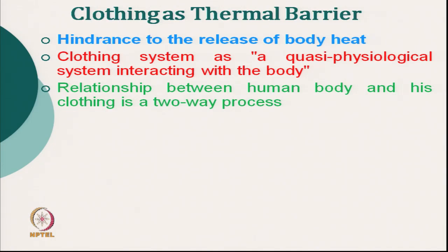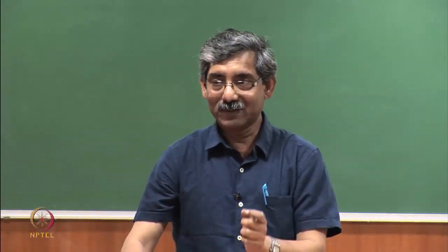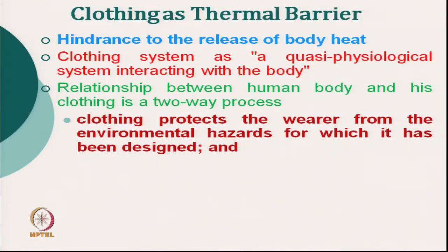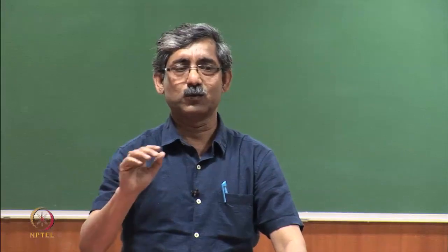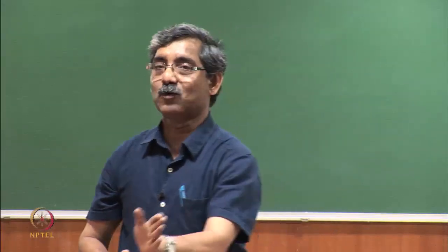The relationship between clothing and the body is a two-way process. Sometimes clothing helps protect us from extreme environments, but it also has negative impacts. In this room at 21–22 degrees Celsius, clothing protects us from undue heat release — otherwise we would feel uncomfortable. In extreme cold or extreme heat, it protects us. We need clothing to protect us.